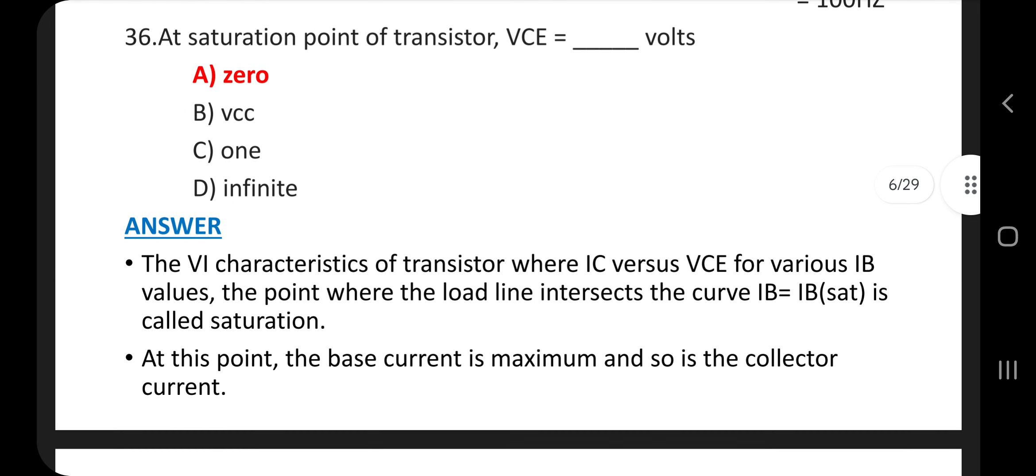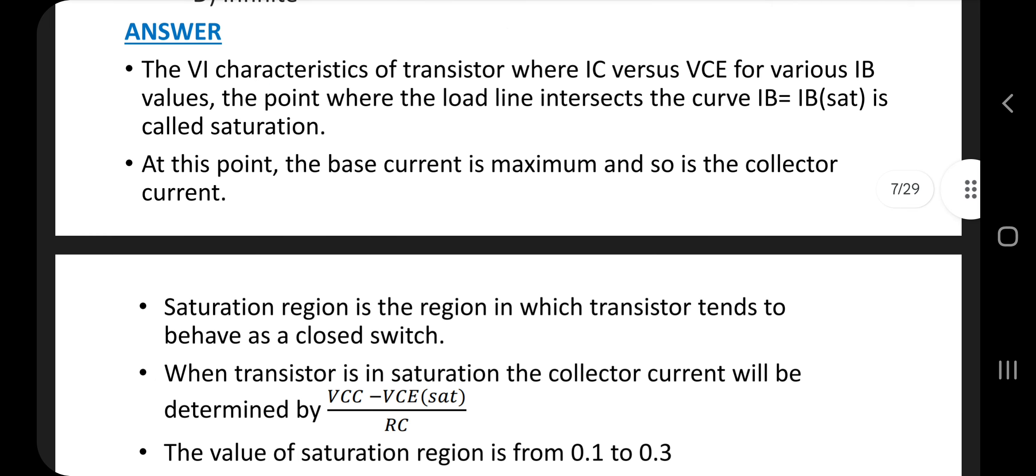Question 36. At saturation point of transistor, VCE is dash volt. Answer is option A, 0. The V-I characteristics of a transistor where IC versus VCE for various IB values. The point where the load line intersects with the curve IB equal to IB saturation is called saturation. At this point, the base current is maximum and so is the collector current.